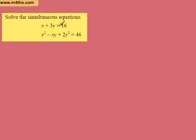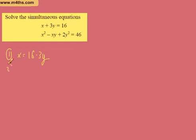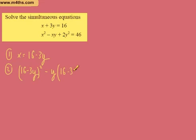Let's look at another one: x plus 3y is equal to 16, and x squared minus xy plus 2y squared is equal to 46. So equation 1: I'm going to make x the subject — x is equal to 16 minus 3y. For equation 2, we substitute in this expression for x. So we get (16 minus 3y) all squared, minus y times (16 minus 3y), plus 2y squared, and that's equal to 46.